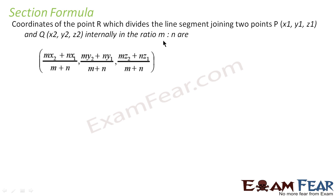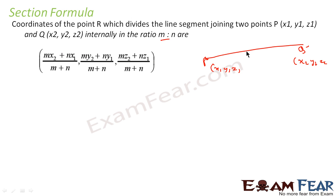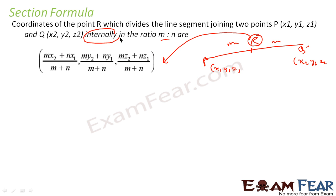A line is divided in M to N ratio. We have done this for two dimensional; this is for three dimensional now. Let's suppose there are two points: point P at (x1, y1, z1) and point Q at (x2, y2, z2), and there is a line in the three-dimensional plane. A point R divides this line in M to N ratio. The coordinates of R are: (mx2 + nx1)/(m+n), (my2 + ny1)/(m+n), (mz2 + nz1)/(m+n). This is when there is an internal division.